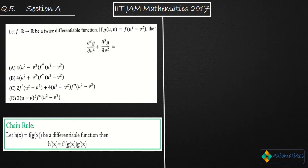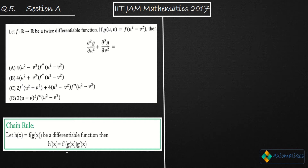This is a very basic result from your intermediate level. This result holds for single variable right now, but it also holds for several variables. What it says is: if h(x) is a composition of two functions — if h(x) = f(g(x)) is a differentiable function — then h'(x) is given by f'(g(x)) · g'(x). This holds for the single variable case.